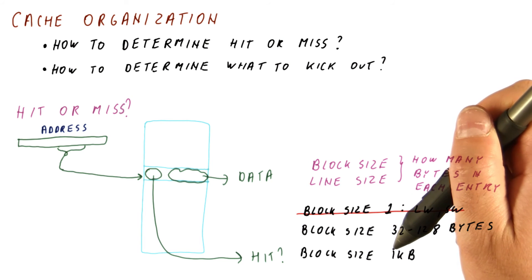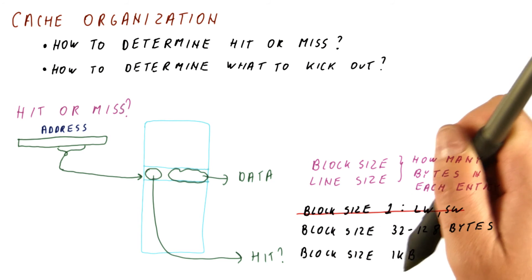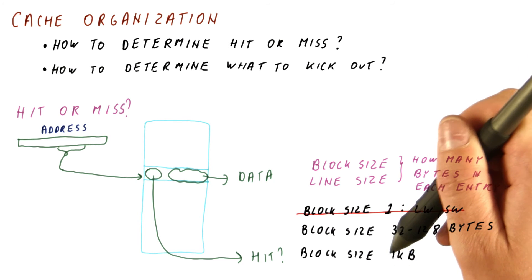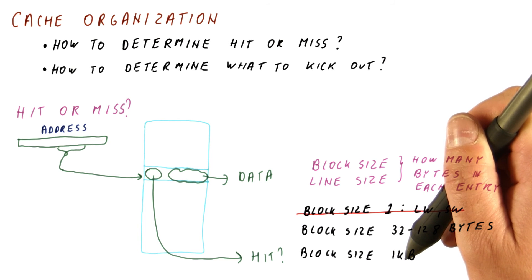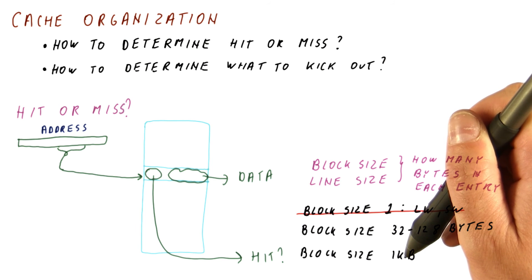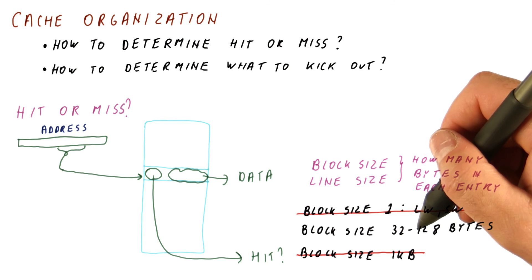So we are occupying space in our cache. Remember that the cache is only 16 to 64 of these kilobytes. So if we bring in a block like this, we're consuming a significant part of the overall space in the cache. And we are doing it probably with data that we won't use much.